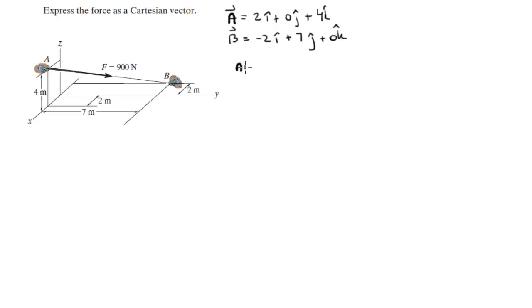Now vector AB is easily found by subtracting vector A from vector B. Minus 2 minus 2 is minus 4i. 7 minus 0 is 7j. 0 minus 4 is negative 4k.